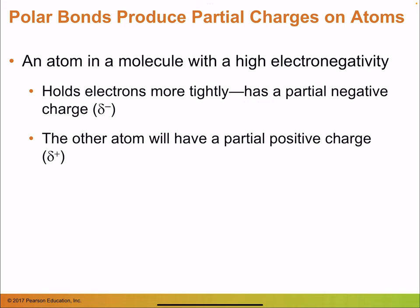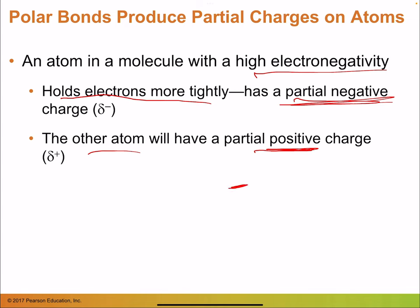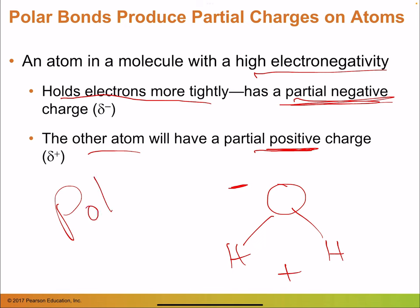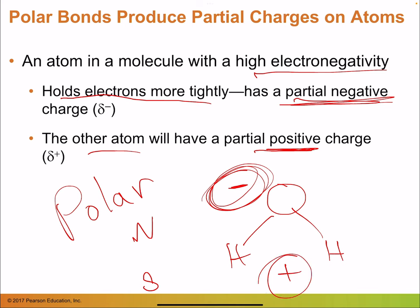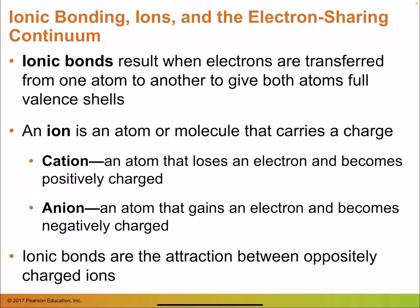When an atom in a molecule has high electronegativity, it holds electrons more tightly and creates a partial negative charge, while the other atom becomes partial positive. In water, the oxygen side is negative and the hydrogen end is more positive — that's where the idea of polar comes from, like polar opposites.